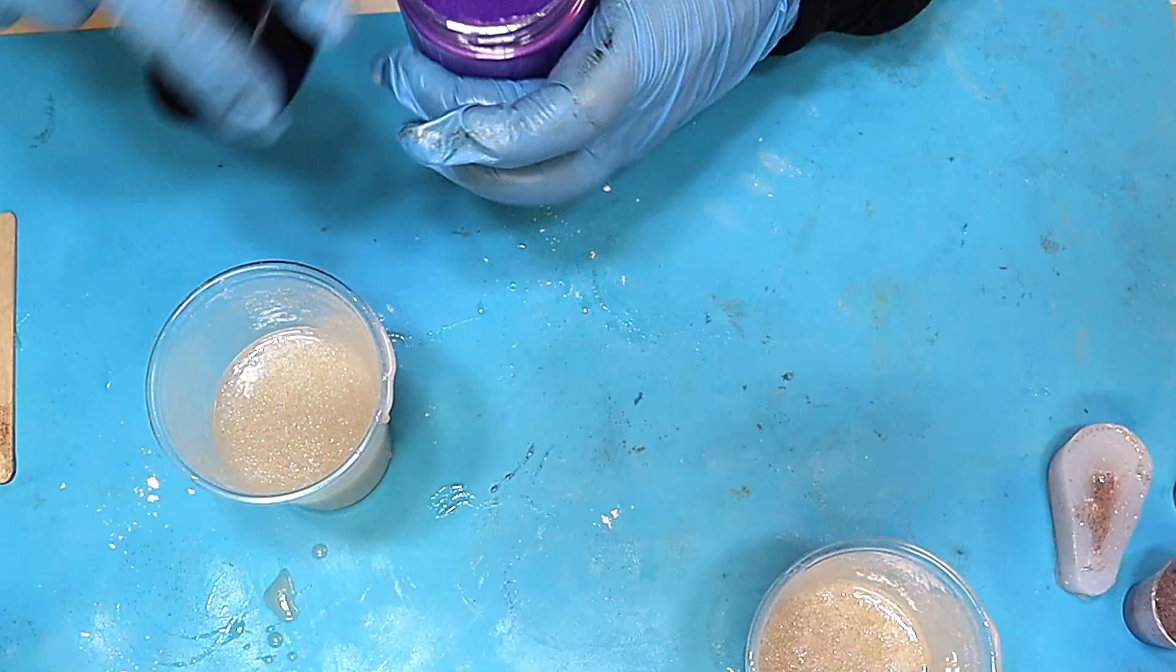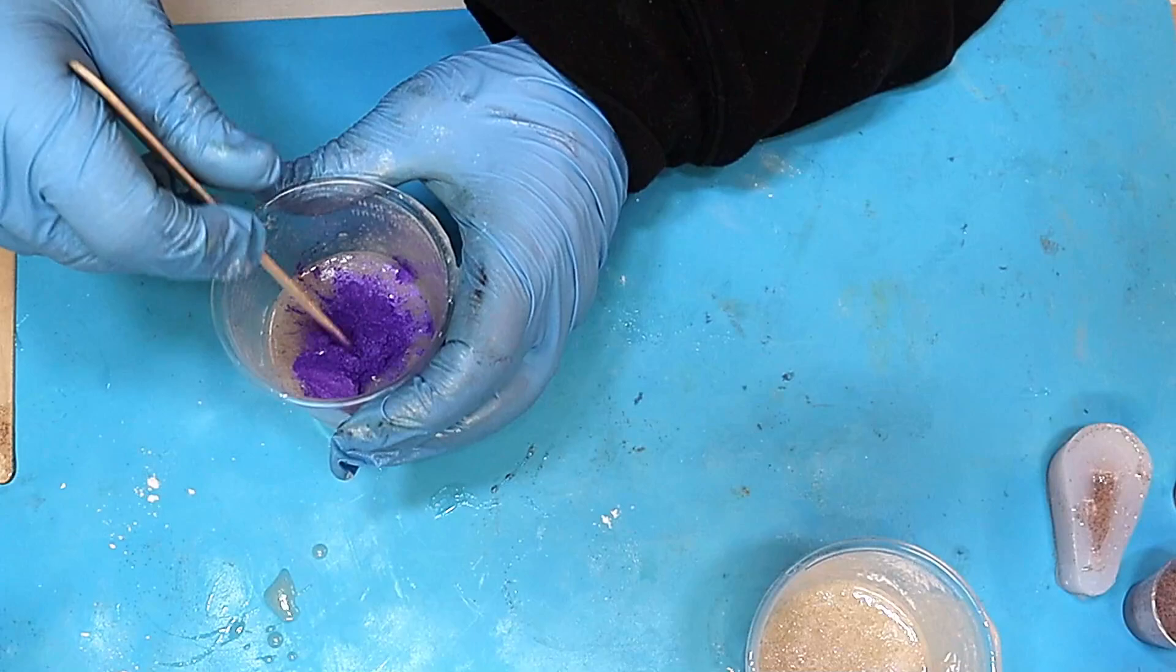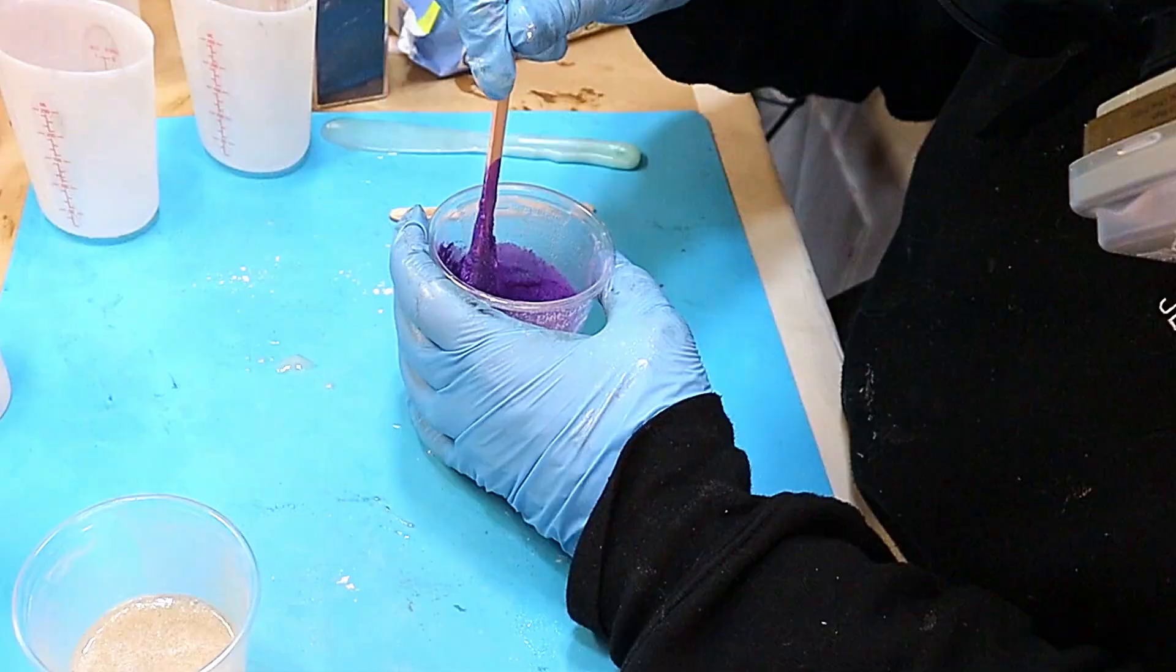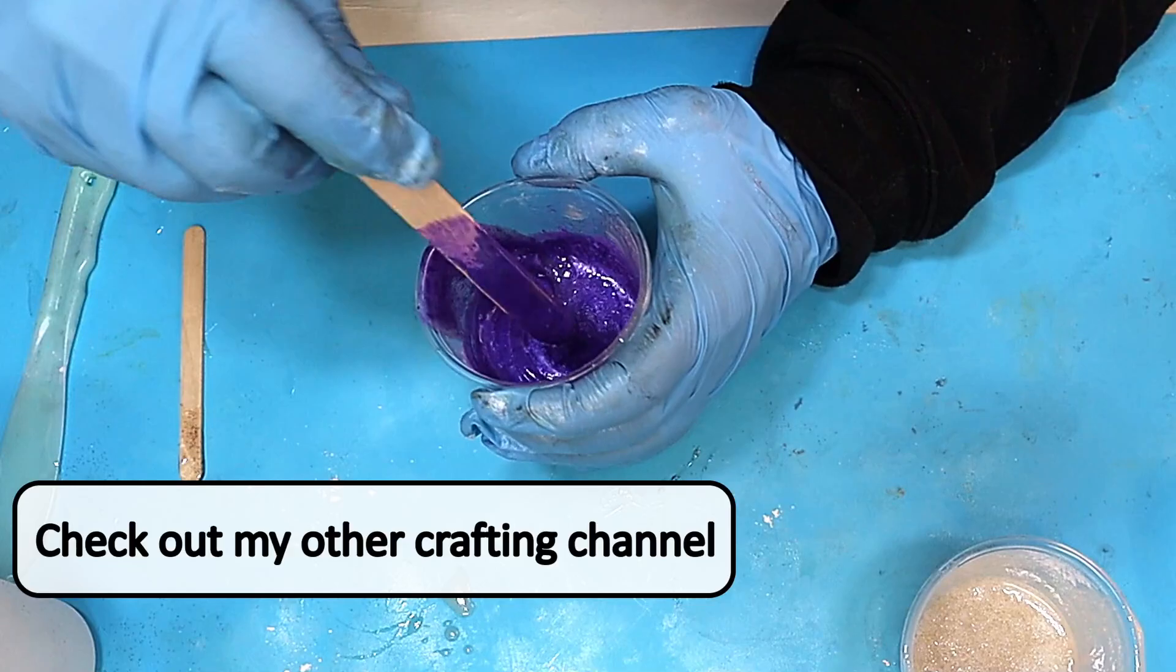So now my favourite thing or second favourite thing because glitter is my favourite thing. A bit of mica powder here. Now I'm going to try and mix this mica powder in here but without it being fully mixed. A bit like you would with a marble cake. Mmm cake. Love cake. Yum yum yum.